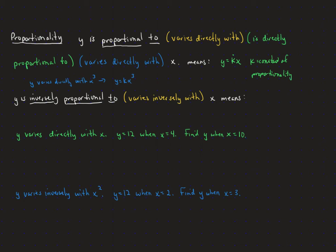If we see 'y is inversely proportional to x' or 'y varies inversely with x,' that means y is equal to k divided by x. Inversely proportional means we divide by that expression. Again, it doesn't have to be just x — we could have 'y varies inversely with the square root of x,' which means y equals k divided by the square root of x. And k is again referred to as the constant of proportionality.